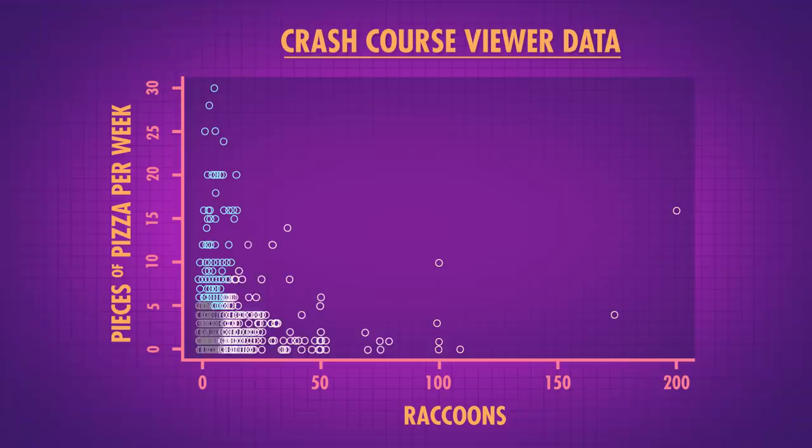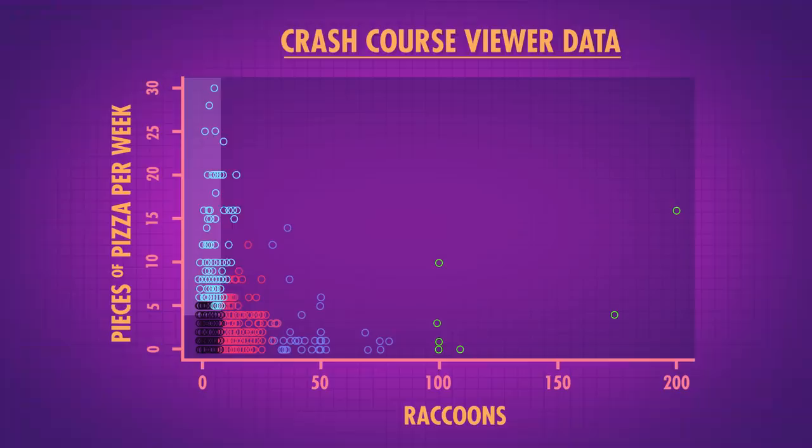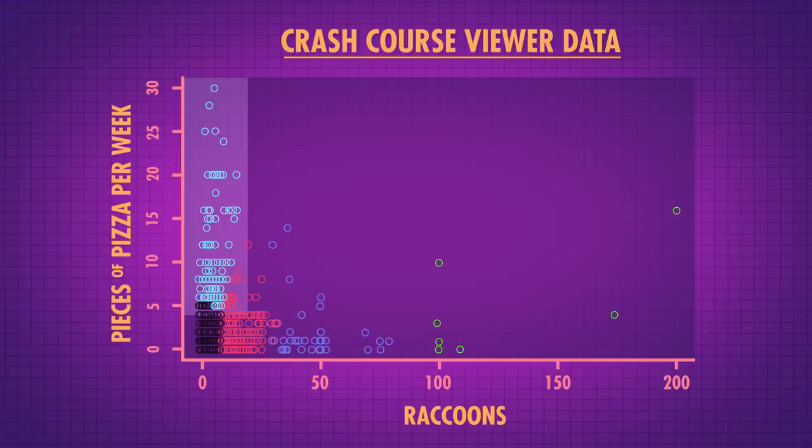A k-means clustering created these five groups. We can see that this green group is pretty confident they could fight off a lot of raccoons — but a hundred raccoons? No. On the other hand, we also see the light blue group. They have perhaps more reasonable expectations about their raccoon fighting abilities. They also eat a lot of pizza each week, which makes me wonder — could they get the pizza delivery folks to help out if we go to war with the raccoons?